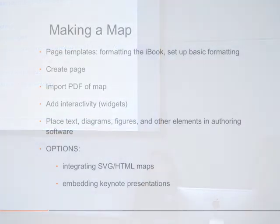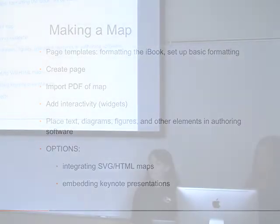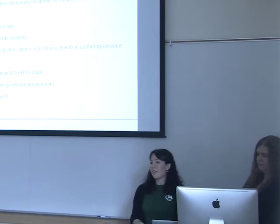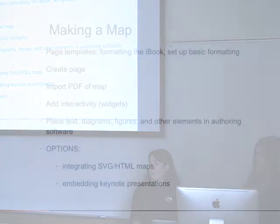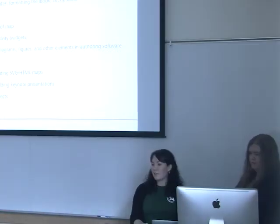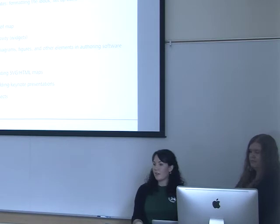The first step for making our atlas is creating the page template in iBooks Author, which gives the atlas its look and makes it comprehensive and cohesive. Each person creates their own maps, but placing them all on the same template makes it look like it was done by one person rather than 20 individuals. Students then find their own data, create the map in ArcGIS or QGIS and Illustrator, save it as a PDF, and bring that PDF into iBooks Author, where they add text and any figures or diagrams.